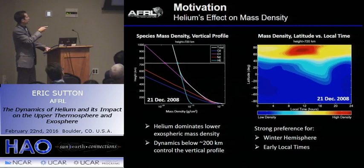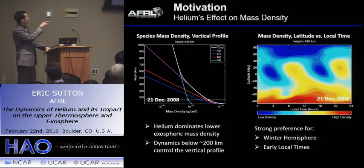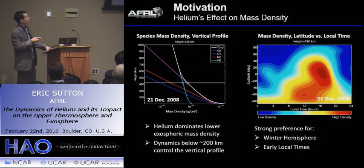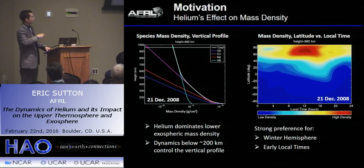Helium is important for mass density up in the exosphere, but a lot of the dynamics controlling it are operating down in the thermosphere — molecular diffusion, eddy diffusion, circulation. These are all determining the gradients in the lower region, which then lead to a more linear profile on the log scale above.